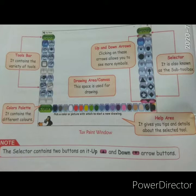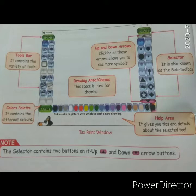The color petal contains different colors. The white area is known as the drawing area, where you can create drawings — this space is used for drawing. There are brushes with up and down arrows; clicking on the arrows allows you to see more symbols. This is a sub-toolbox. The help area gives us tips and details about the selected tool — if you select any tool and want to know its purpose, the information will appear in the help area.